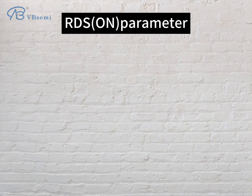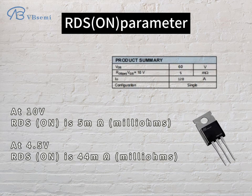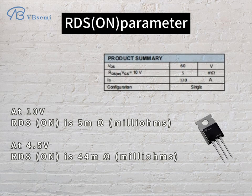RDS-ON parameter: at 10V, RDS-ON is 5mΩ; at 4.5V, RDS-ON is 44mΩ.